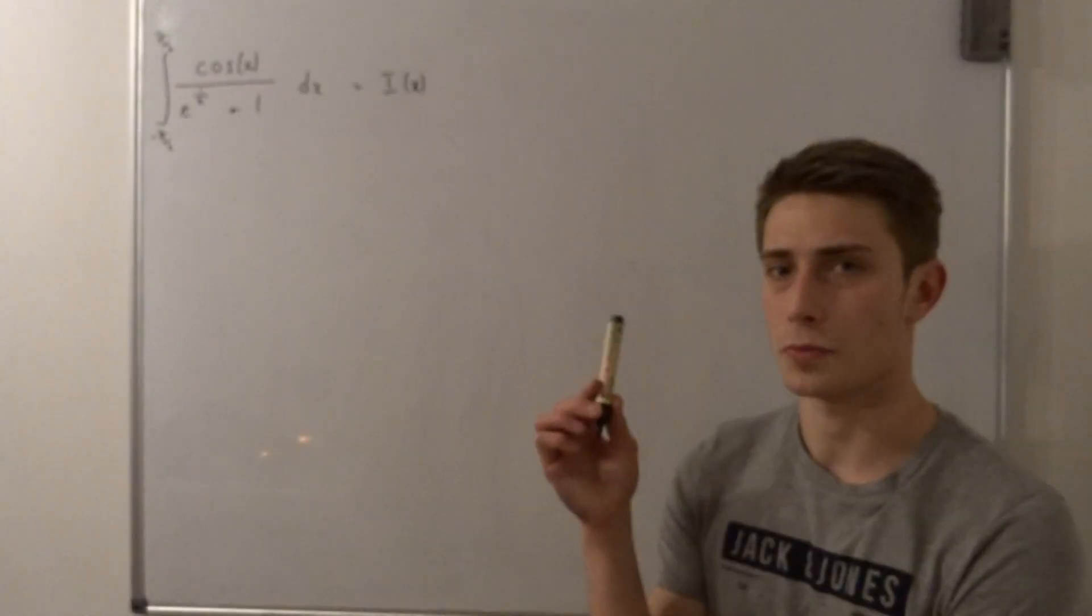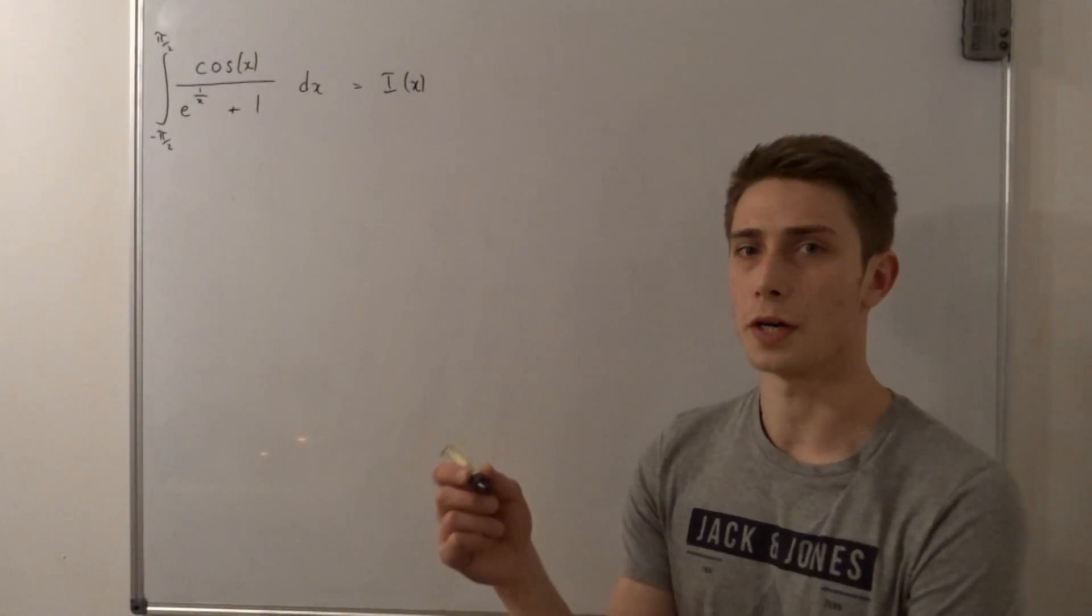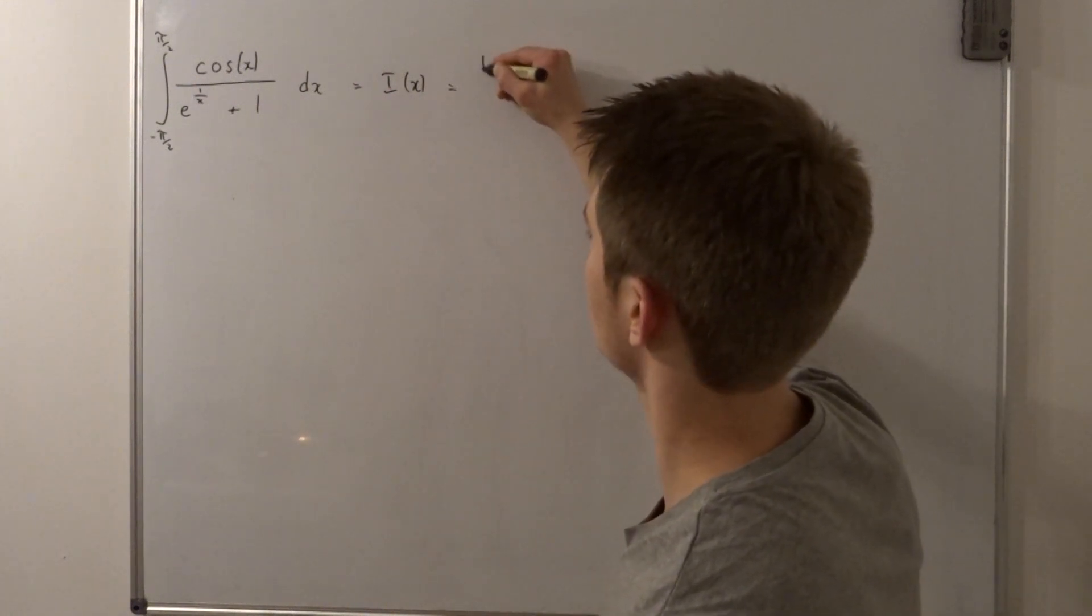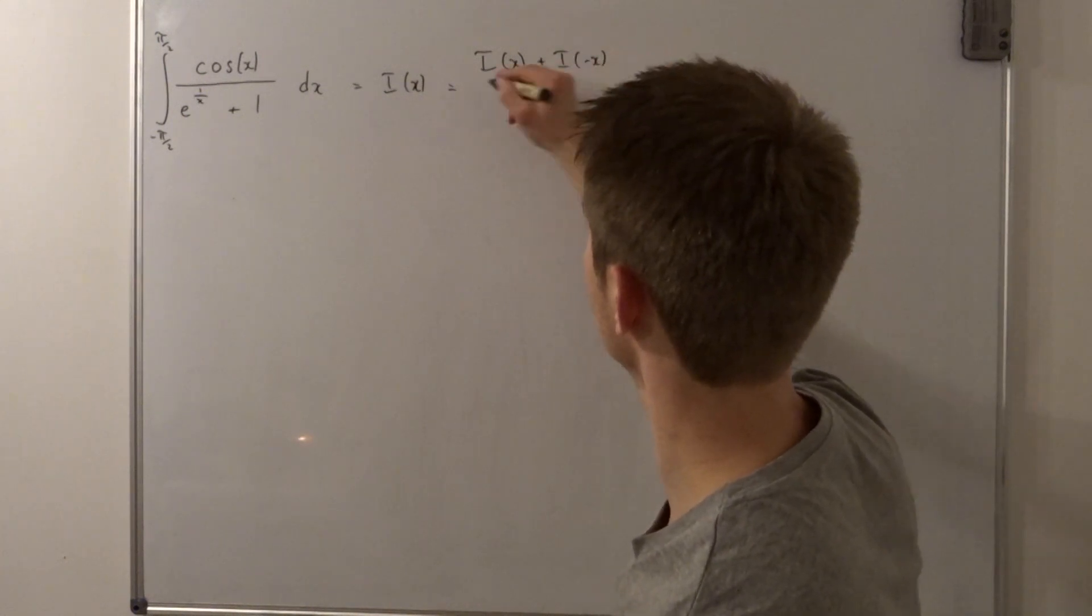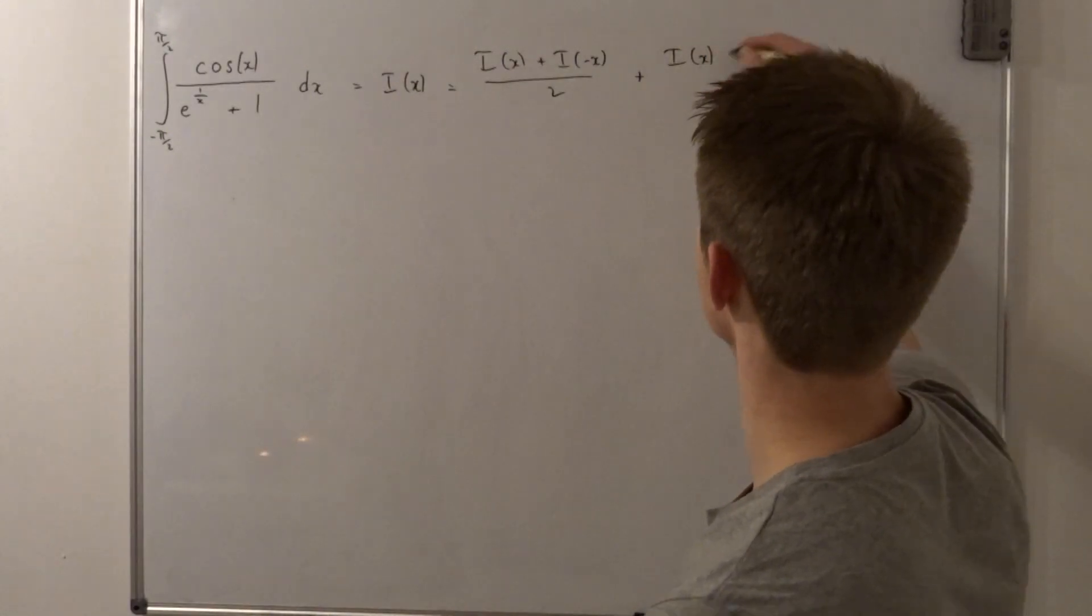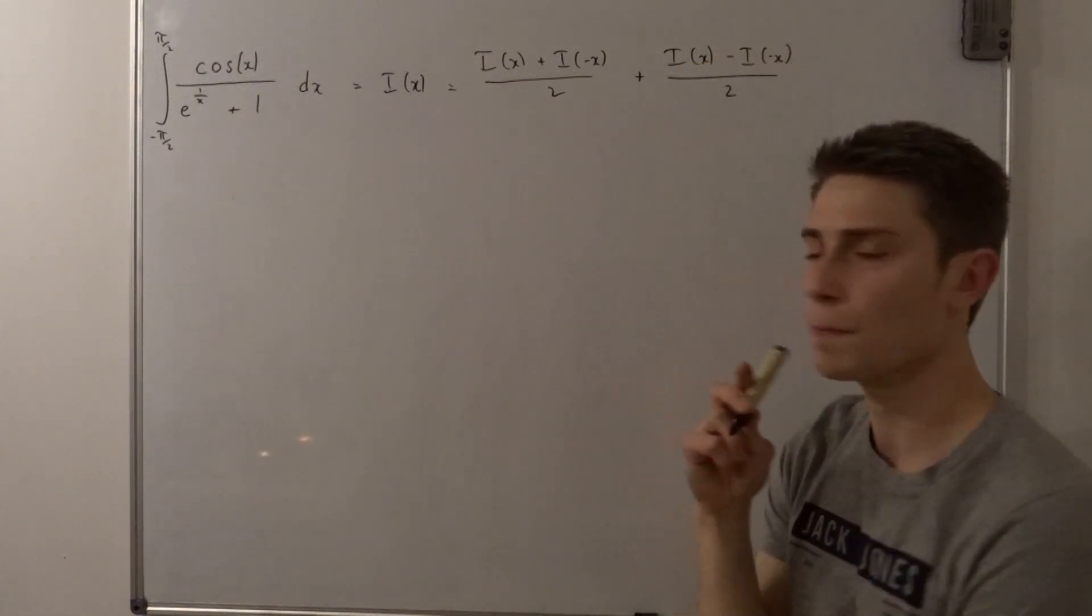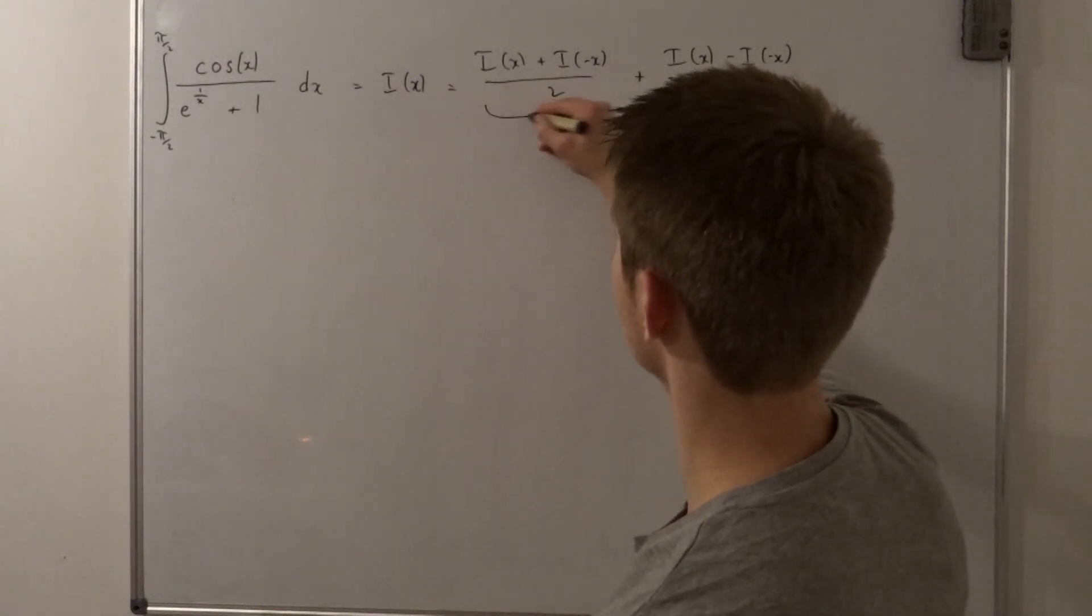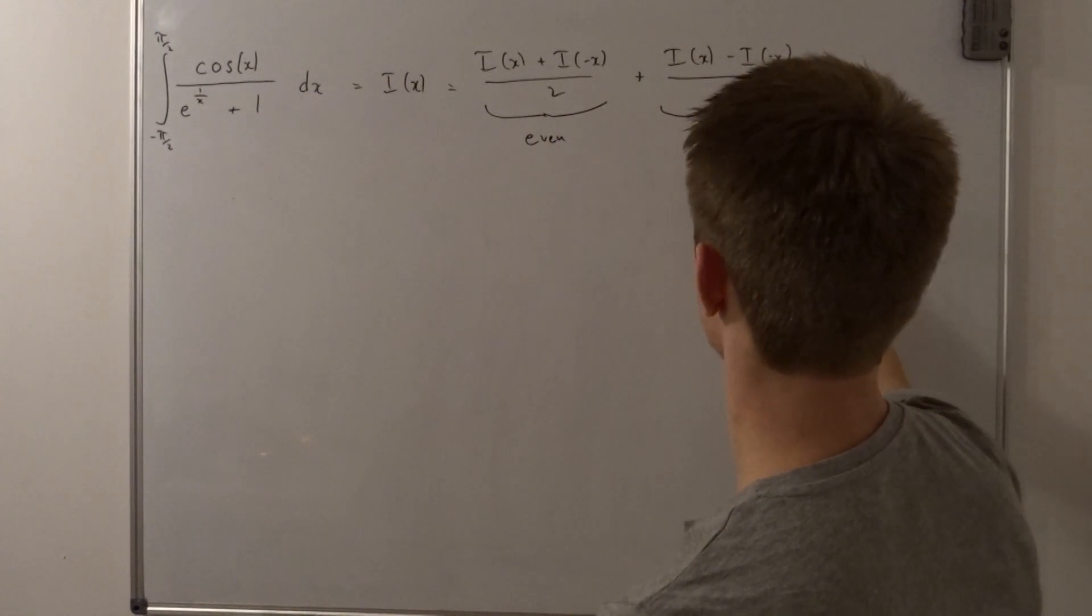So i of x we just said that we want to split this up. So we already derived the formula so we can use what we already derived. So i of x is nothing else than i of x plus i of minus x over 2 plus i of x minus i of minus x over 2. Okay what can we conclude now? So we already know that this is an even function and this is indeed an odd function.